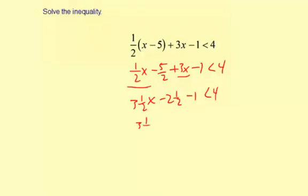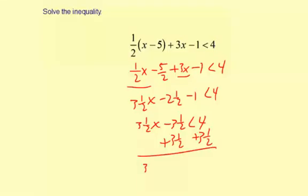So 3 and 1 half x, and then combine here, minus 3 and 1 half, less than 4. And then I'm going to add 3 and 1 half to both sides. So plus 3 and 1 half. So 3 and 1 half x is less than 7 and 1 half.